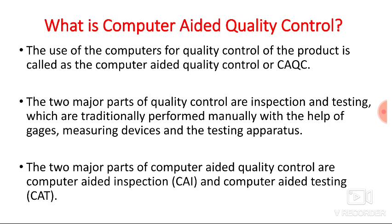Now we will discuss our main topic — computer-aided quality control. You have understood quality and quality control, so now it is better to understand computer-aided quality control. The use of computers for quality control of the product is called computer-aided quality control or CAQC. If you are taking help of a computer for determining the quality of the product, then it is known as computer-aided quality control.